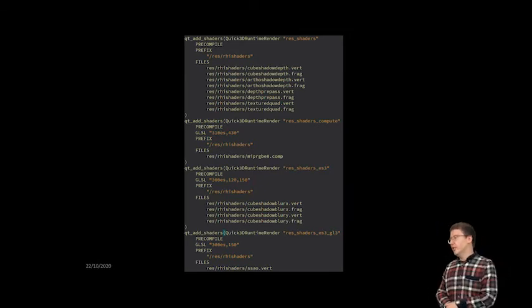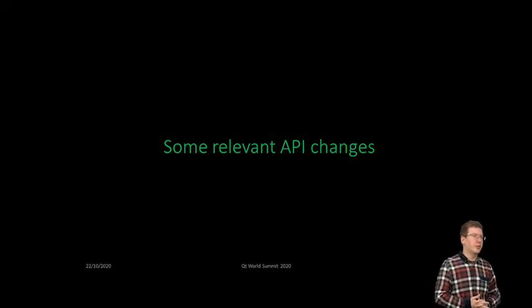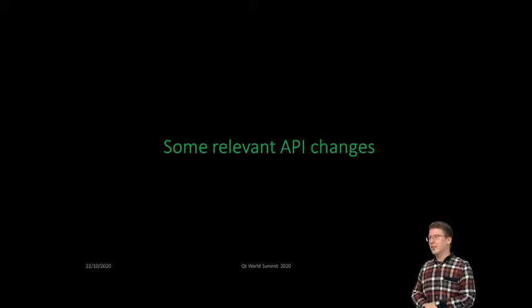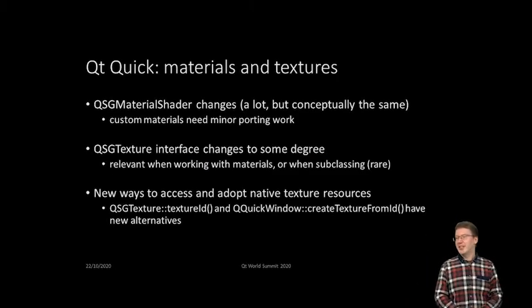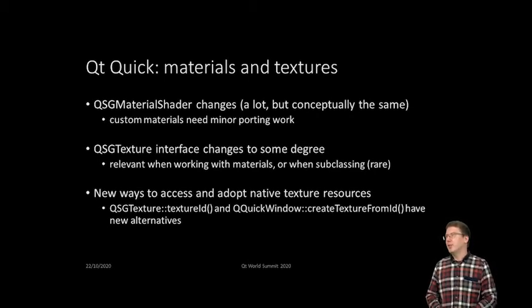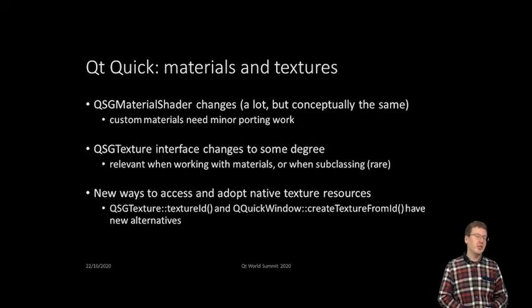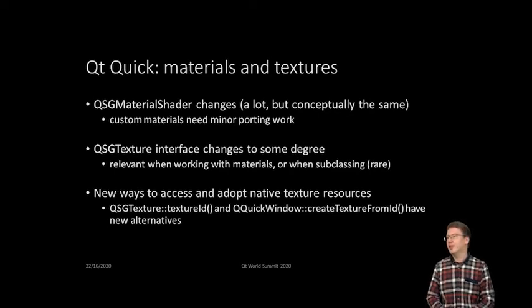Finally, let's take a look at some of the Qt Quick API changes. This will be mostly relevant to the lower-level advanced users of Qt Quick. It should come as no surprise that QSGMaterialShader — this public class interface — is changed. One could say this is basically the only really big change, because it used to be tied to OpenGL in many ways, which was unfortunately not ideal. While the concept is exactly the same, there are new virtuals to reimplement if you are subclassing QSGMaterialShader.